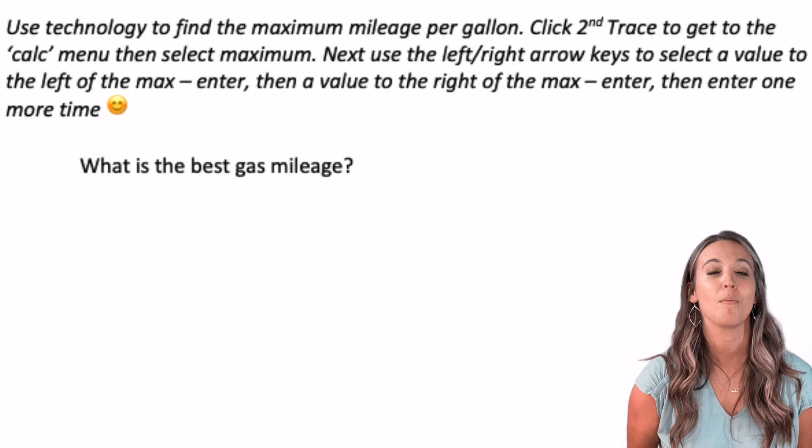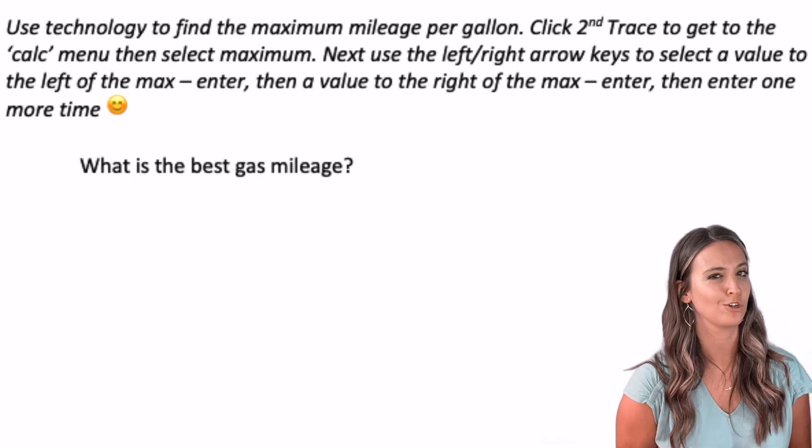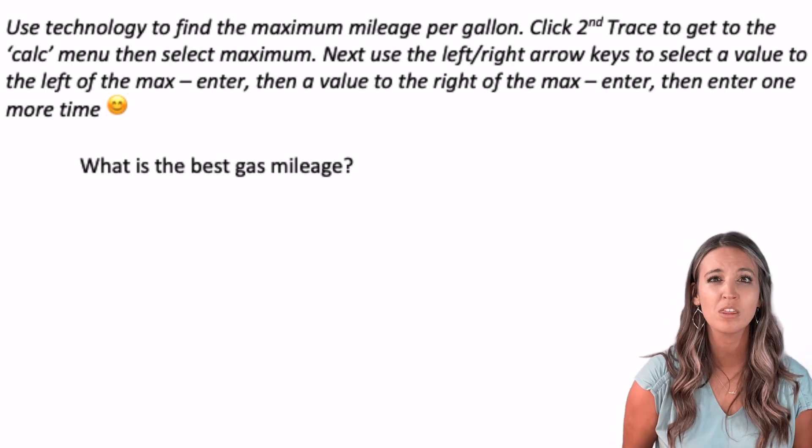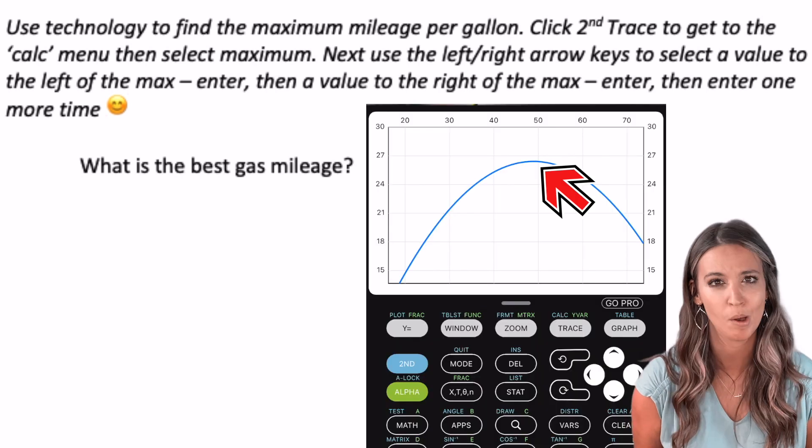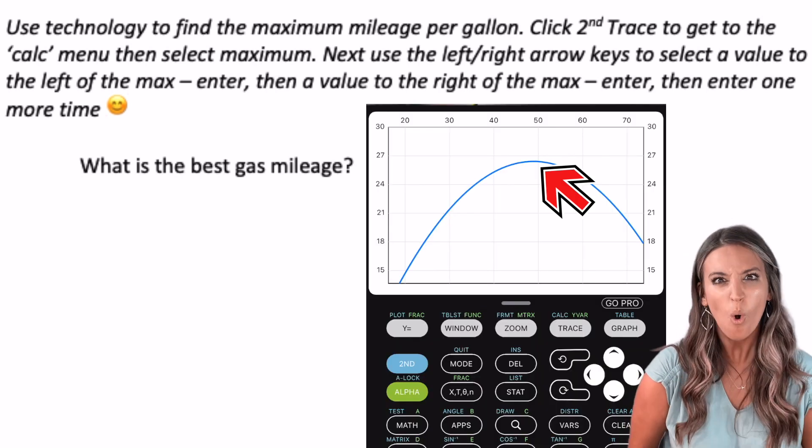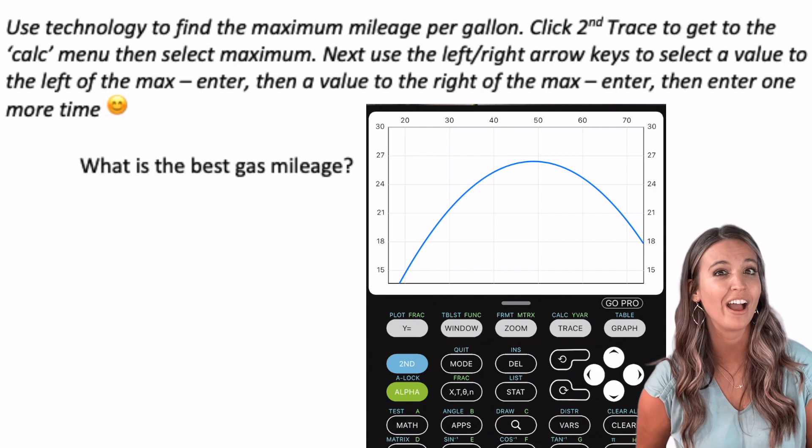Last, we need to approximate the best gas mileage using our quadratic function. Well, best gas mileage, that would be the most miles per gallon. Most, maximum. We're looking for the maximum. We can actually use our calculator to find this on our graph.